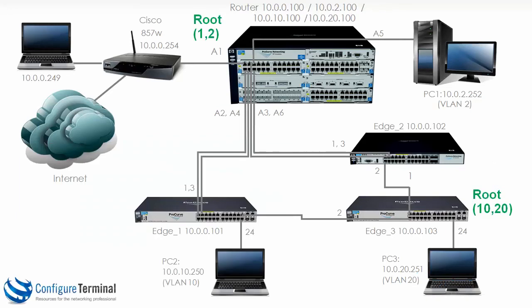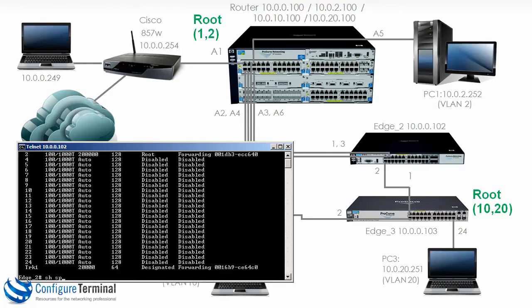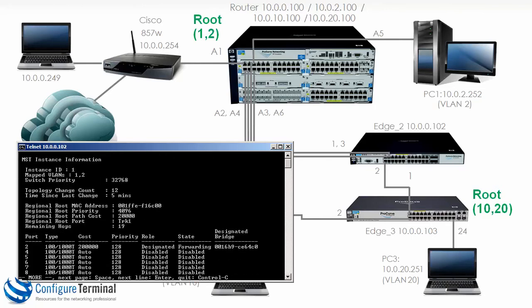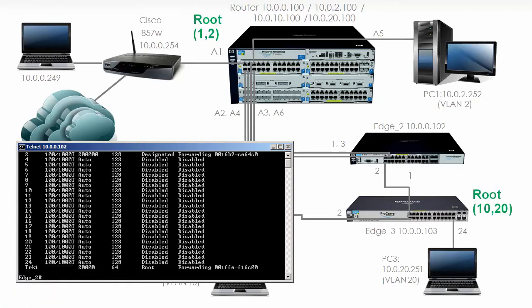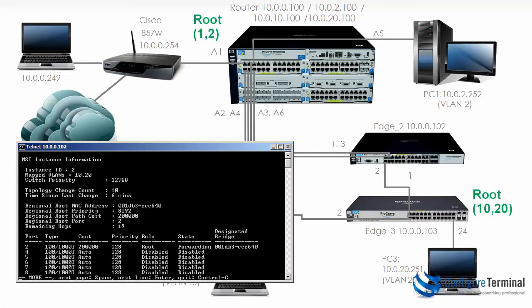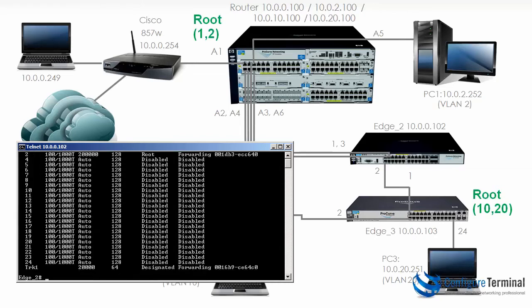If we're going to fill in the forwarding and blocking options in this diagram, we need to do it twice because there are two separate instances. On edge 2, 'show spanning-tree instance 1' shows port 2 is forwarding and TRK1 is forwarding. The same is true for instance 2, but notice the roles change: port 2 is the root for instance 2, whereas TRK1 is the root for instance 1. There are two separate spanning tree topologies.